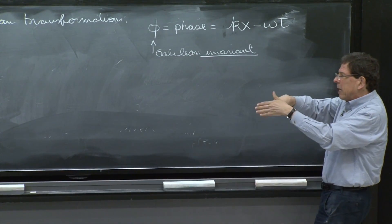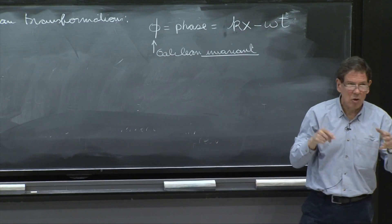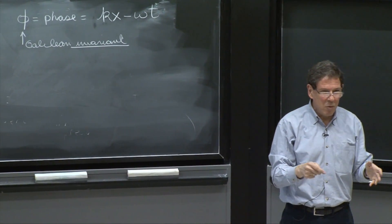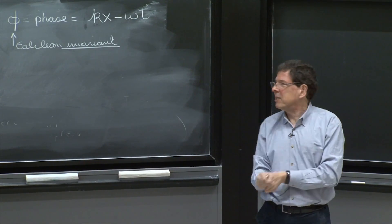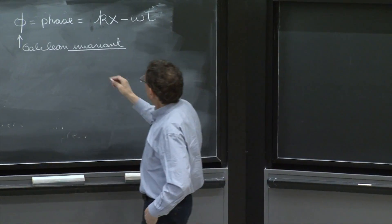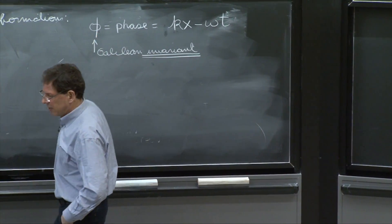So if you have a place where the wave is a maximum, or a place where the wave is 0, this is an ordinary wave. Everybody would agree that at that place, you have a maximum, and at that place, you have a 0. So observers should agree on the value of this phase.